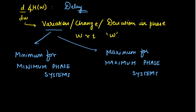Whereas this variation is maximum for maximum phase systems, meaning we have the maximum possible delay. This simply indicates that the delay in the minimum phase system is minimum — that is, we have minimum delay — and in the case of maximum phase systems we have maximum possible delay.